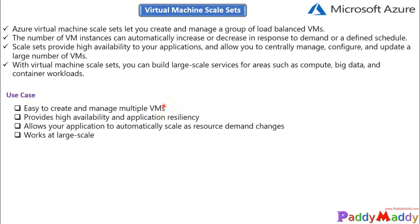Let's understand why we create these virtual machines by looking at four different use cases. The first one is easy to create and manage multiple VMs. You might be looking for consistent and reliable performance of your applications with a specific VM size and disk configuration, and the application installation should already be included within that image.